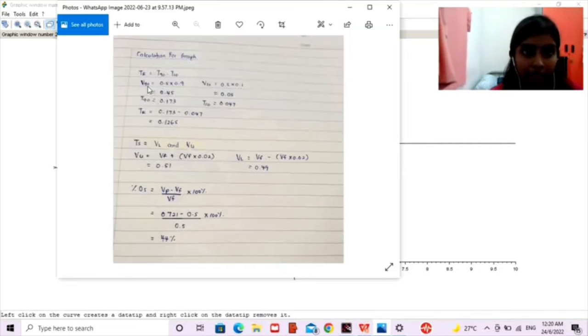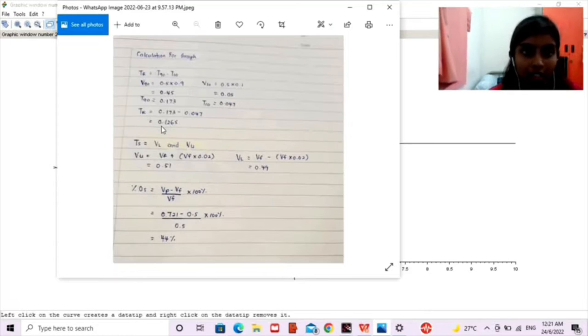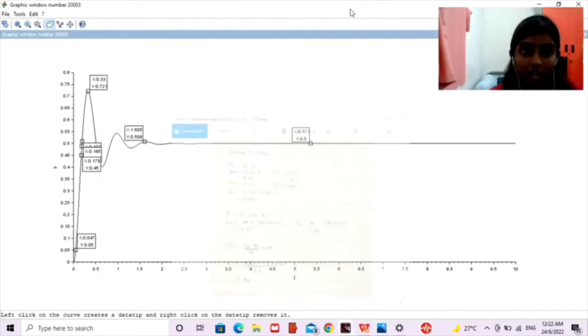In order to find T10 we need to find V10 first. So to find V90 we need to times 0.9 with the final value, and also for V10 we need to times 0.1 with final value. So we got V90 equals to 0.45 and V10 equals to 0.05. From this graph the value of T10 equals to 0.047 and the value of T90 is 0.173. When we minus 0.047 from 0.173, the value of TR equals 0.126 seconds. As for settling time we need to find lower value and upper value. For upper value we had got 0.51 and for lower value we had got 0.49. From these values we had got the settling time which is 1.605.